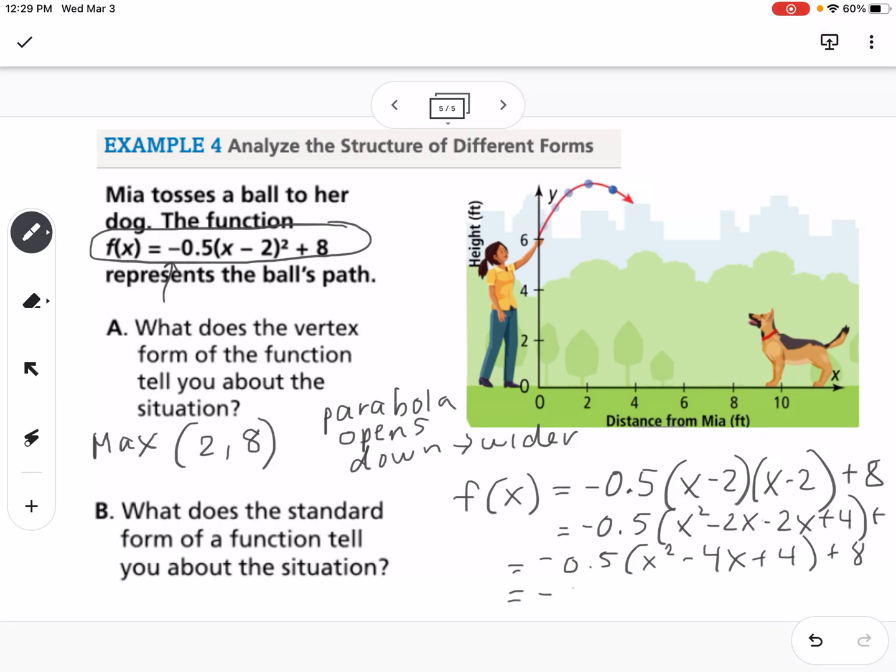I'm going to distribute, so -0.5x² + 2x - 2 + 8. Finally I have f(x) = -0.5x² + 2x + 6. The main difference about what I can determine from my standard form is that the ball started at a height of 6 feet. You can see that in our picture up here. The maximum is at (2, 8) and the ball starts at 6 feet. This illustrates how we can find different things when a quadratic is in different forms.